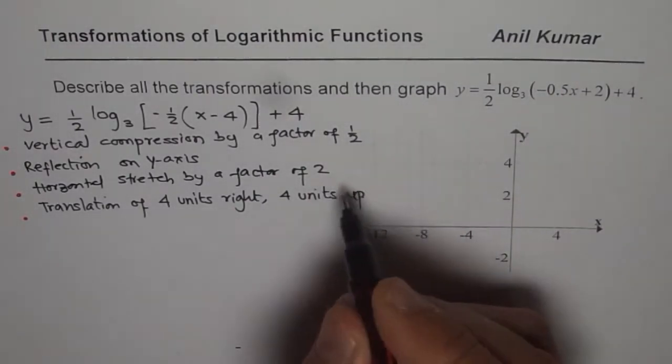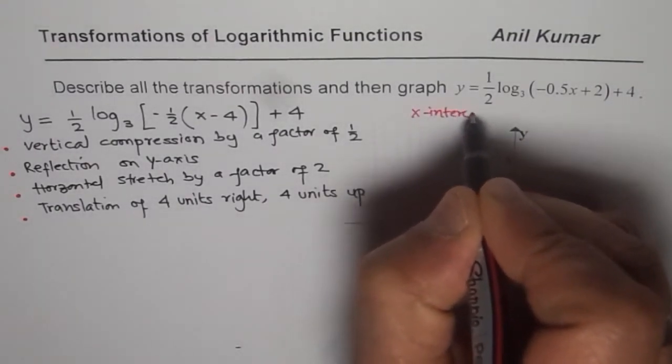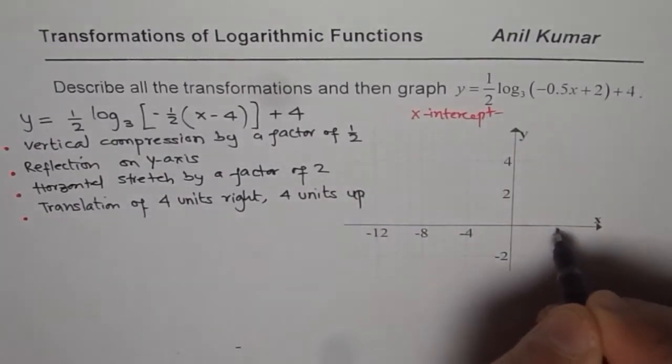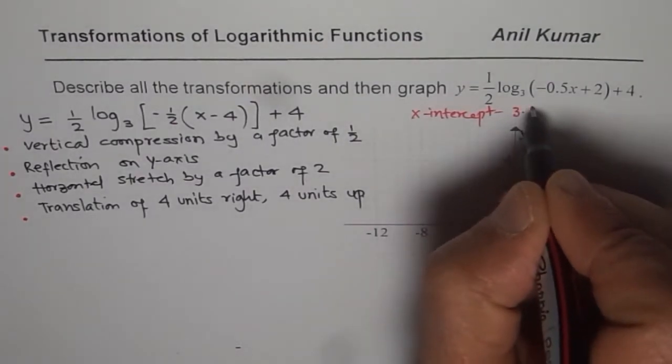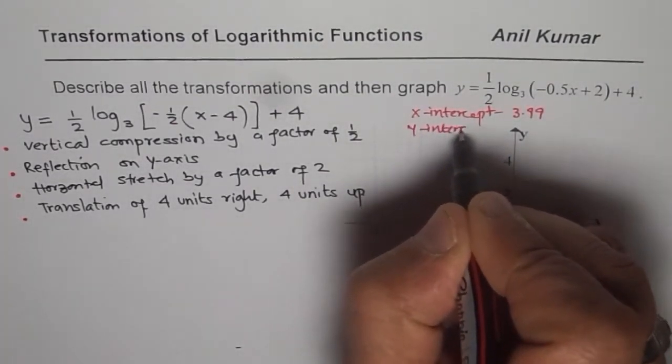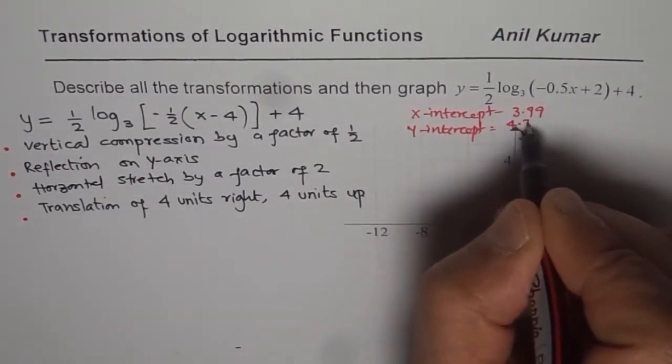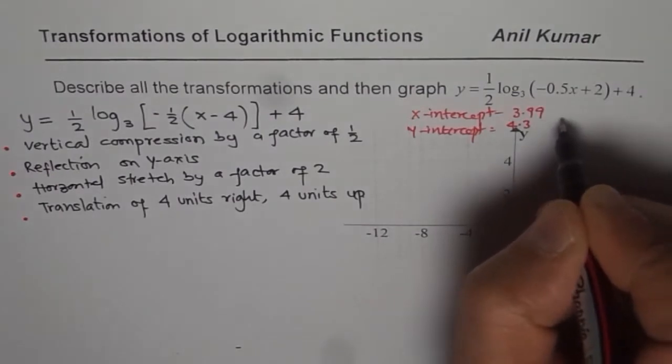So let me write down those values here. We found that the x-intercept is very close to 4, it is around 3.99, and the y-intercept for this function is 4.3. So these values you can check in another part of the video for which the link is provided.